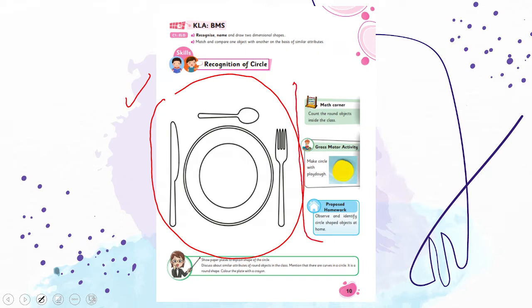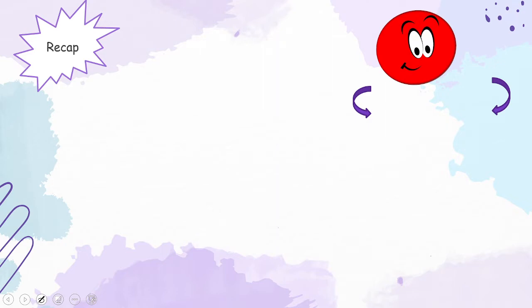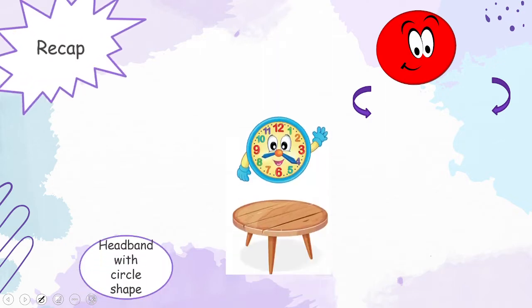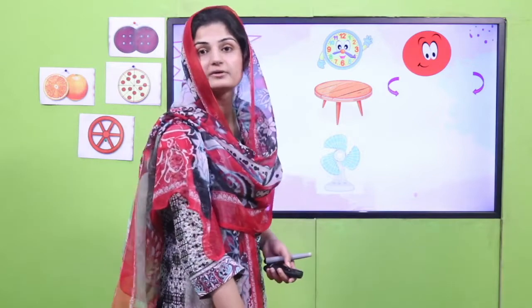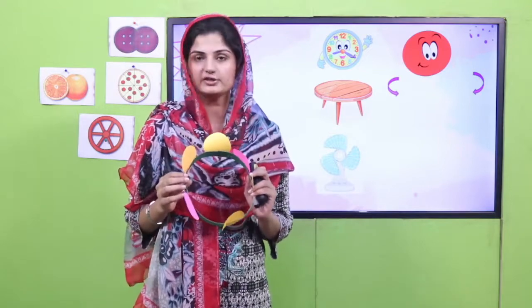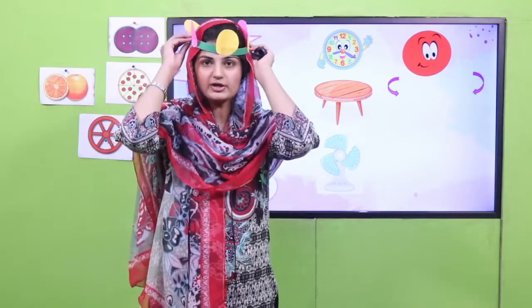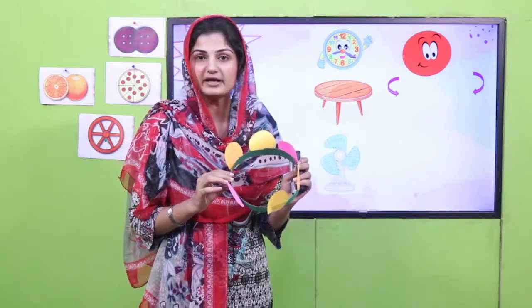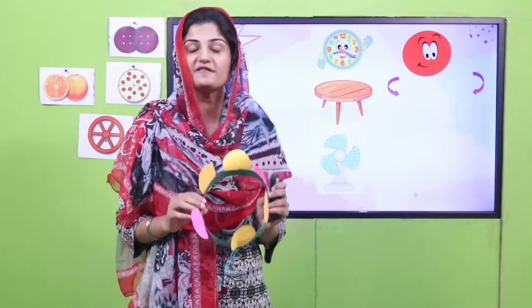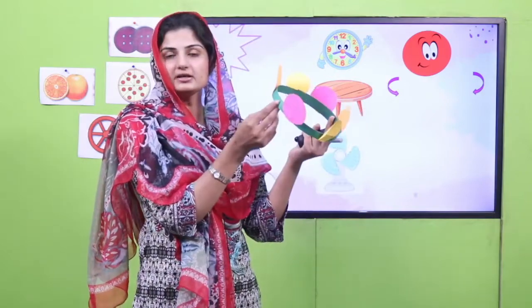Now it's time for the recap. First, I asked you to tie the headband of the circle shape. Do you remember this headband? I hope you have it with you. If you don't have it, pause your video here and quickly grab it and put it on your head. I ask you to wear this headband because it's going to remind you that we are doing the lesson on the circle shape. That is why we have made the headband — so quickly pause the video and put it on your head.